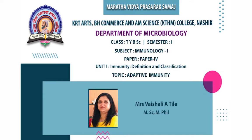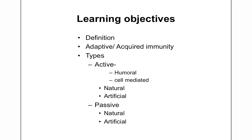At the end of this lecture, the student should be able to define immunity, explain in detail adaptive immunity, the types of adaptive immunity — active and passive immunity. Active immunity which operates in two different ways: humoral and cell-mediated, and passive immunity which may be either naturally acquired or artificially acquired.